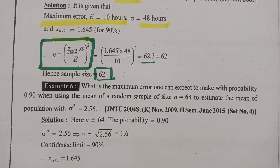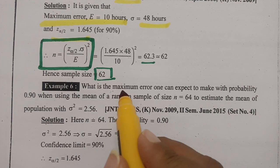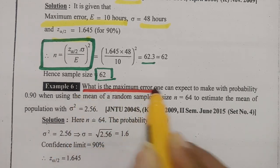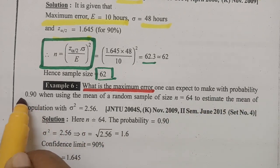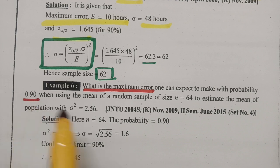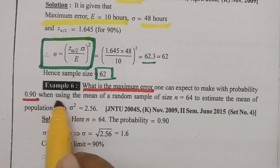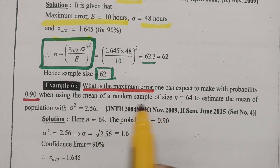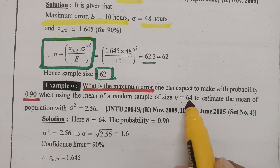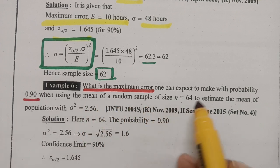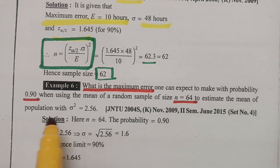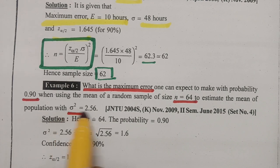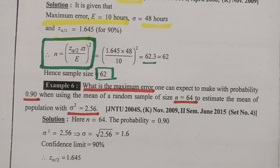The next question is: what is the maximum error one can expect to make with probability 0.90 when using the mean of a random sample of size N equal to 64 to estimate the mean of the population? Here sigma square is given as 2.56. N is equal to 64 is given, and the probability is 0.90.